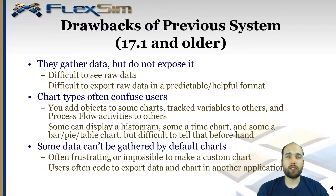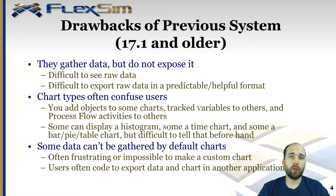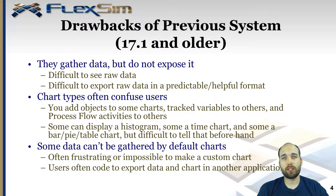Another drawback is that the chart types are kind of confusing. In the chart library there are some charts that deal with process flow objects, some that deal with regular 3D objects, and some that deal with tracked variables. It's very difficult to know which charts deal with which kind of object, and also difficult to know how that chart is going to display. Some charts display as a histogram, some as a time plot, some you can choose between those two. It's very hard to know how it's going to display until you make it and look at the options.